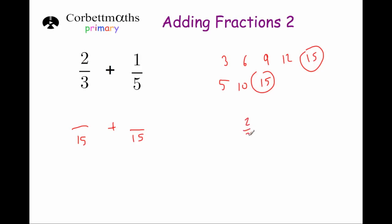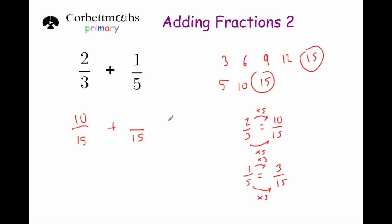For two thirds, we want to change it to something over fifteen. We need to multiply three by five to get fifteen, so we multiply the numerator two by five as well: two times five is ten. So the numerator will be ten. For one fifth, to change it to something over fifteen, we multiply five by three to get fifteen, so one times three is three — one fifth is the same as three fifteenths. Now both denominators are the same, so we just add the numerators: ten plus three is thirteen, giving us thirteen over fifteen.